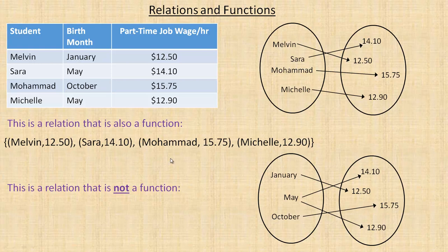I'll give you a specific definition on the second page, but basically if you know the first value in a relation — in this case the person's name — then you can find out how much they make. If we said Sarah, well Sarah makes 14.10. There's only one Sarah here; it lists that she makes 14.10. Mohamed makes 15.75, and you don't see another Mohamed anywhere — he's only matched up with 15.75.